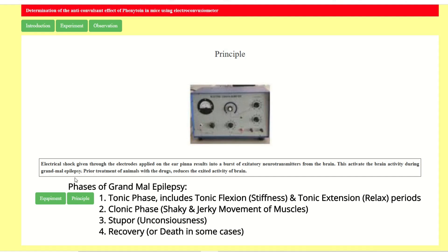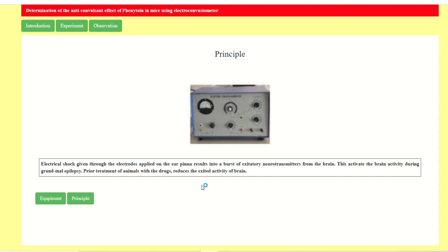The second phase is the clonic phase. In the clonic phase, all body parts show a jerky movement. During that period the animals enter the clonic phase, then the stupor — at that time animals become unconscious — and lastly the animal recovers from all these seizure stages. These are the stages of grand mal epilepsy.